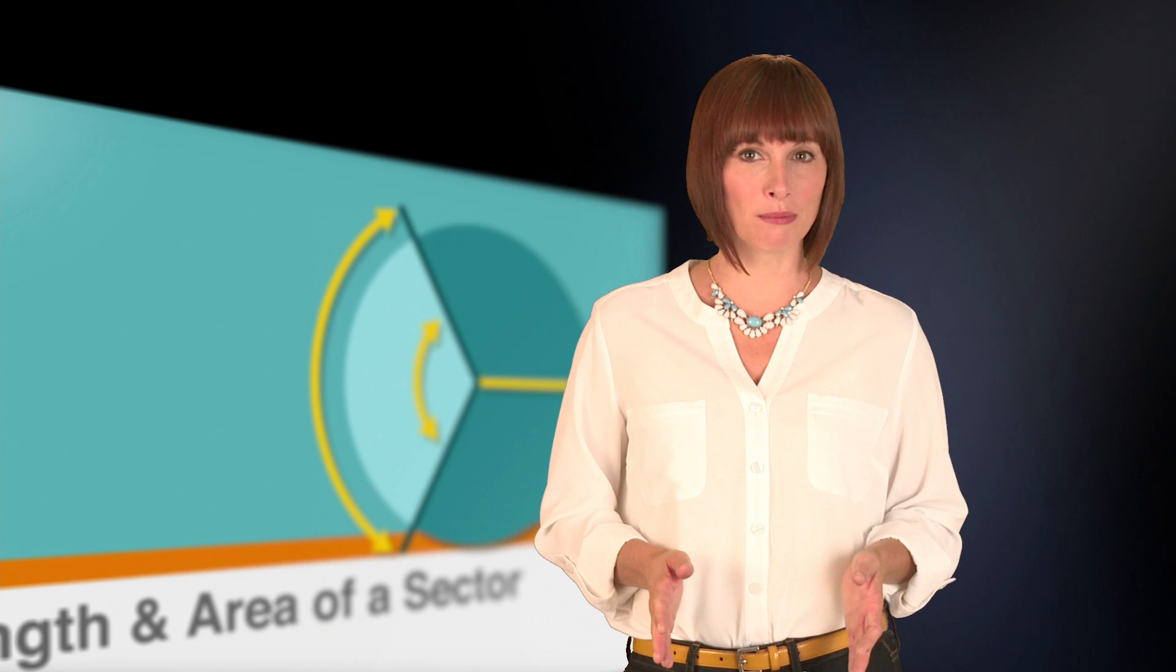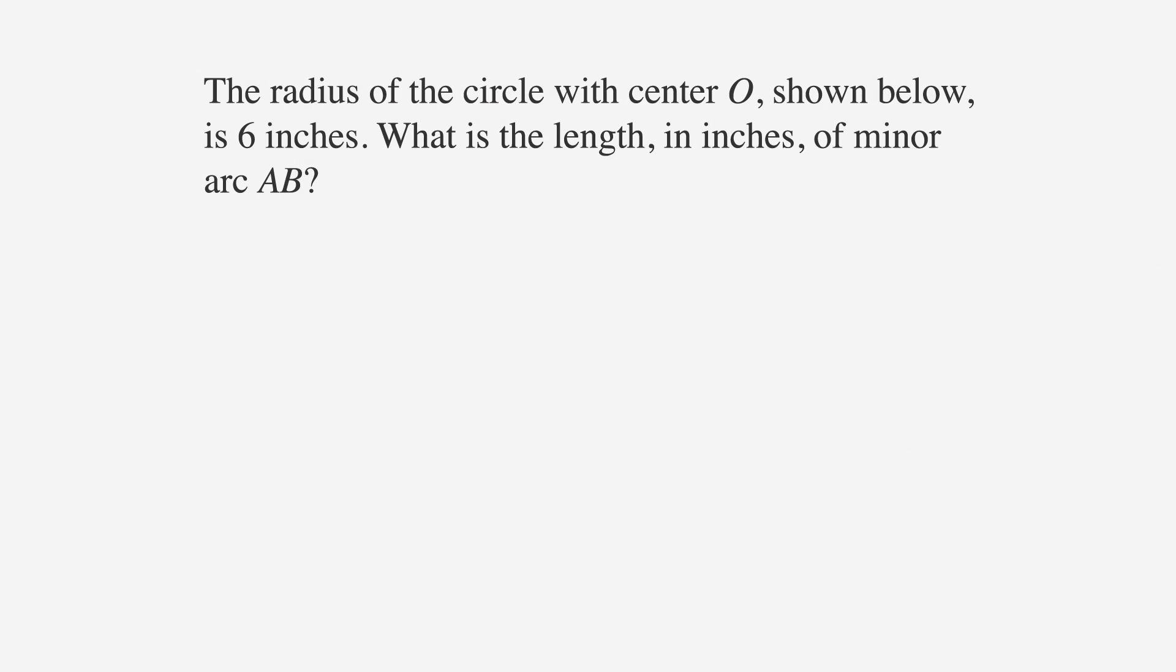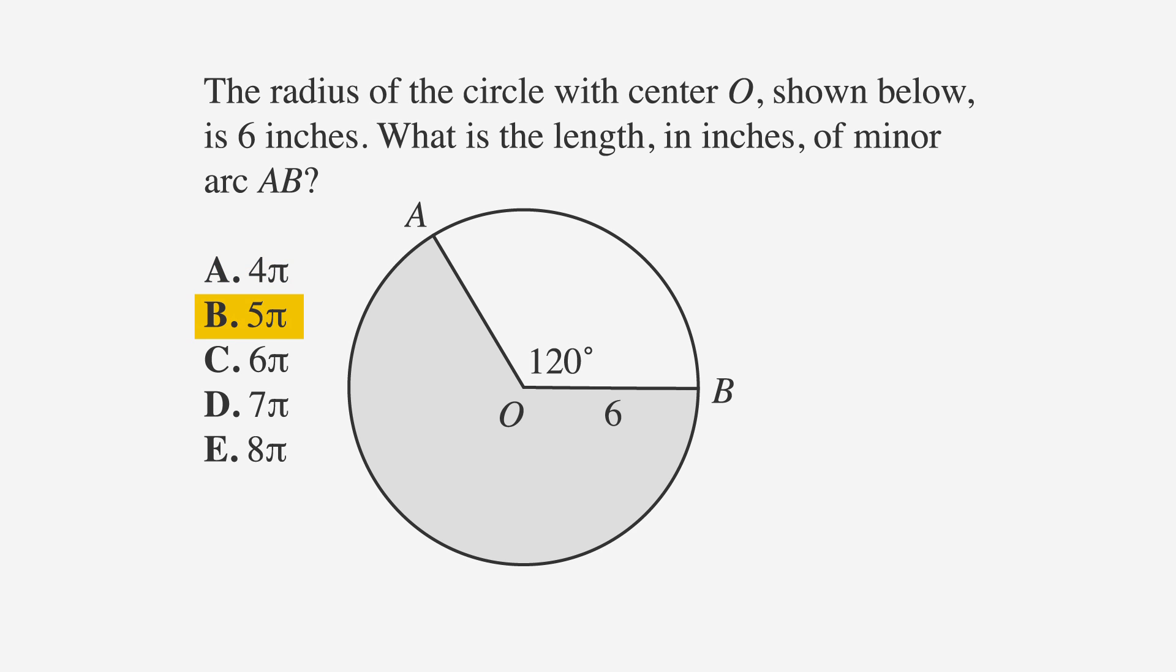Let's look at an ACT problem that asks us to find arc length. The radius of the circle with center O shown below is 6 inches. What is the length in inches of minor arc AB? A is 4π, B is 5π, C is 6π, D is 7π, and E is 8π.